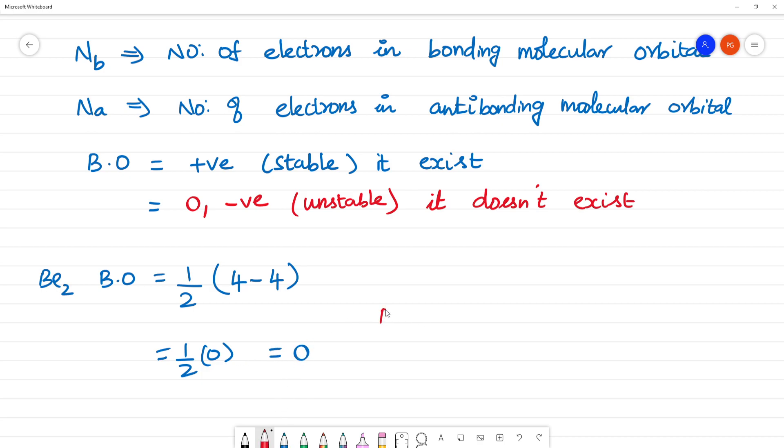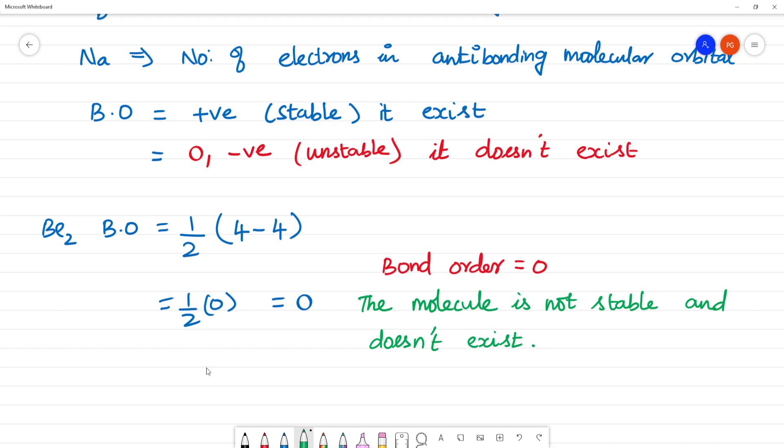If the bond order is 0, the molecule is not stable and does not exist. The molecule is not stable, not stable and does not exist. So Be₂ beryllium does not exist.